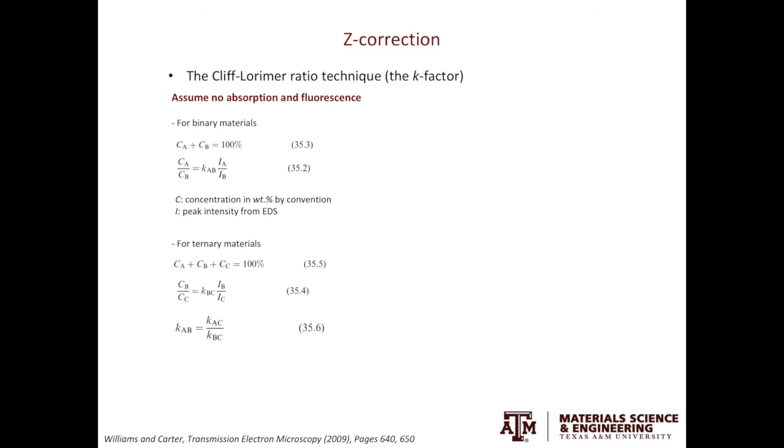Notice that in the binary system, there is only one K-factor, KAB. However, in the ternary system, you have three K-factors, KAB, KAC, and KBC.